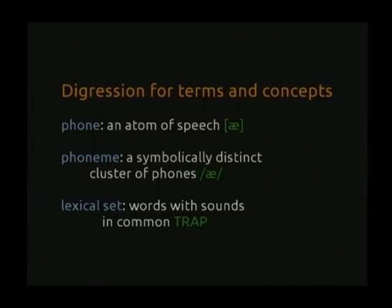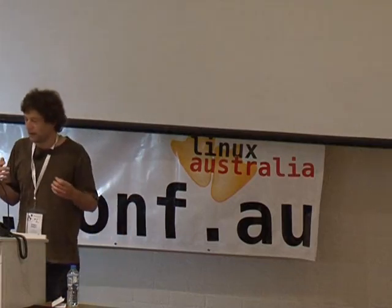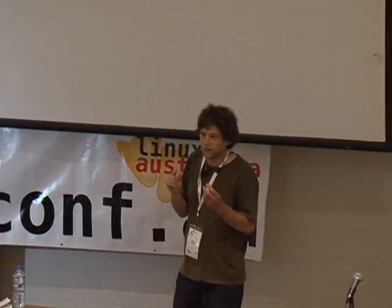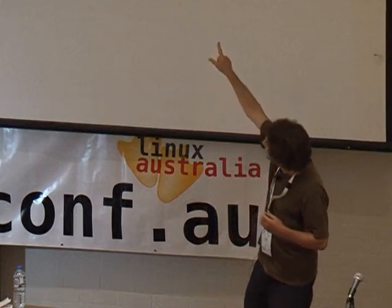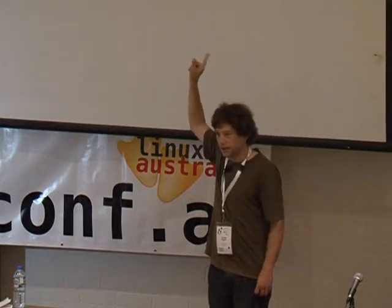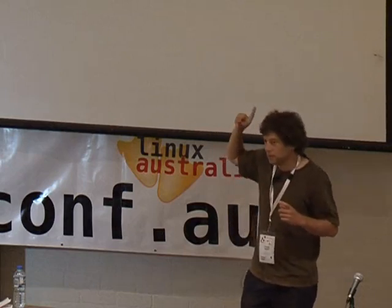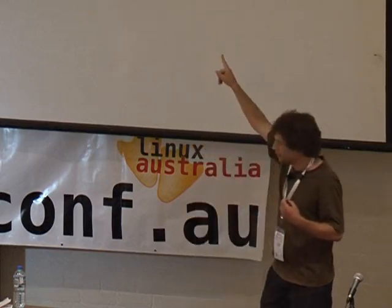I want to talk about some linguistic concepts which show why the American models don't work for us. A phone is a particular kind of sound - if you hold or move your tongue in a certain way and breathe, you'll make that phone. This picture with the square brackets around the AE thing - that AE is an ash. When linguists use square brackets for talking about phones, that's an exact sound - it's roughly the vowel in 'trap' when you say it, though not when I do - I'm a New Zealander, I use a different vowel.